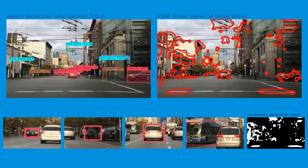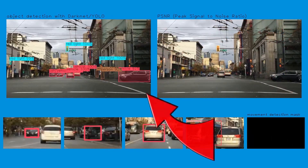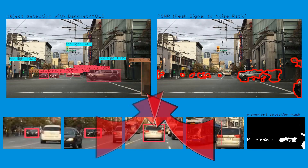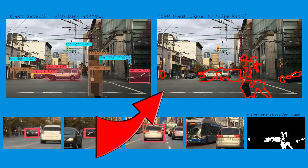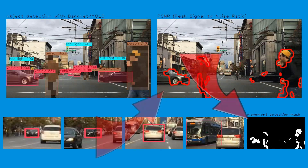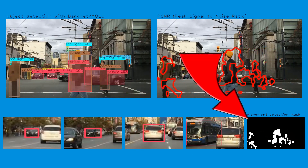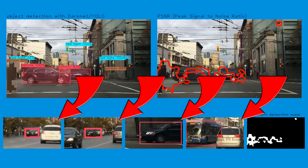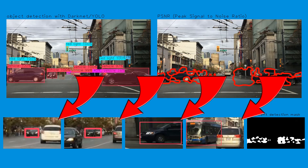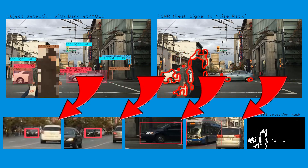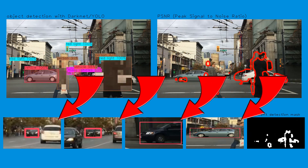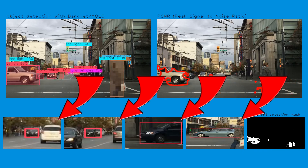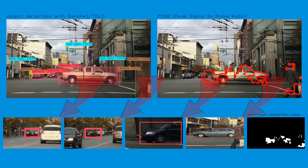Clockwise, we have YOLO in the top left, motion detection in the top right, the binary motion mask in the lower right, and the other smaller windows show various objects as detected in DarkHelp every few seconds.